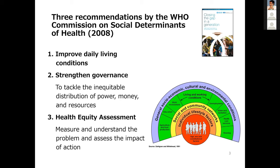Second, strengthen governance to tackle inequitable resource distribution. This is important because a health professional like me — I'm a physician — cannot modify most social determinants of health, such as community networks, education, work environment, and housing. Each professional and organization is not capable enough alone to make a big change in society. Hence, we need good partnerships with multiple sectors. Third, health equity assessment: measuring, understanding the problem, and assessing the impact of action using data. This is important to take a PDCA — plan, do, check, act — process together with multiple stakeholders.